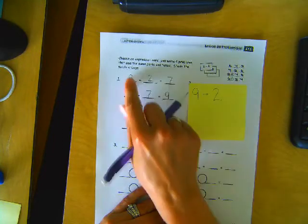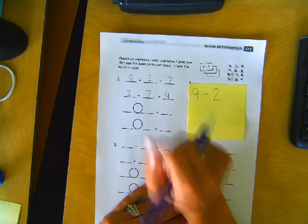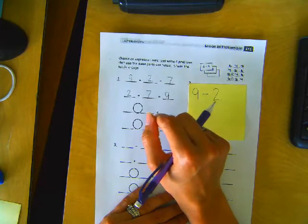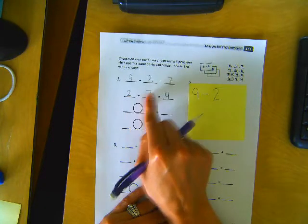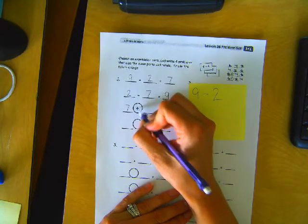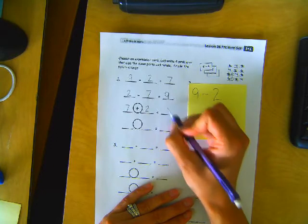So let's take the two smaller numbers, 2 plus 7. And does that equal 9? There's 7, 8, 9. Yep. Do you see how we're using the same three numbers? What's another way we could add? We could add the 7 and the 2. Let's do 7 plus 2, and that still equals 9.